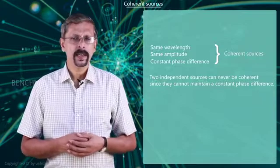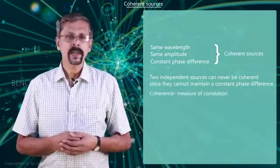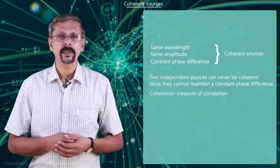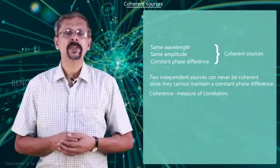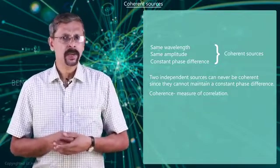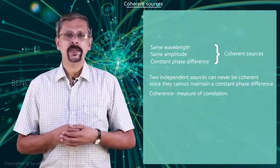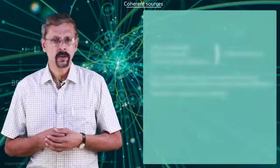There are basically two types of coherence. Coherence is a measure of the correlation that exists between the phases of a wave measured at different points. There are two types: one is temporal coherence and the other one is spatial coherence.